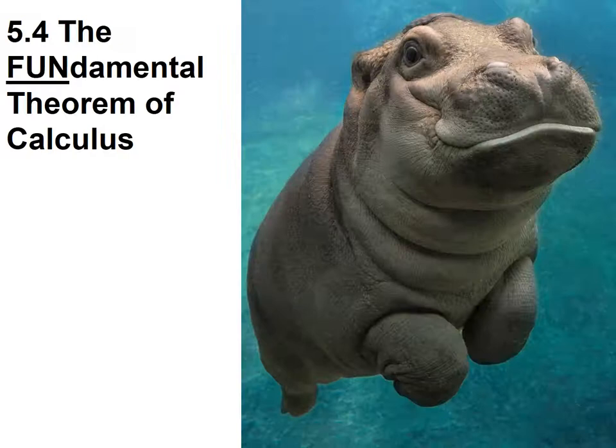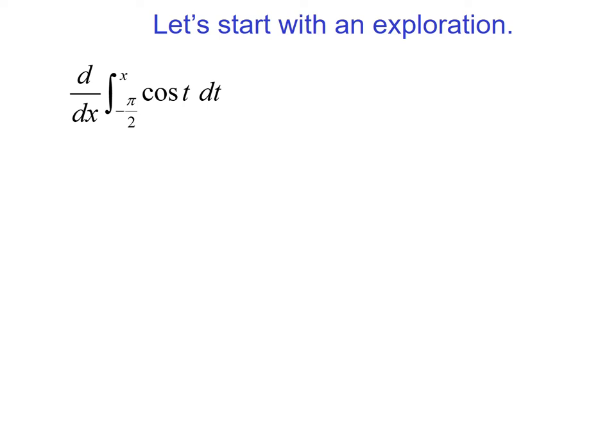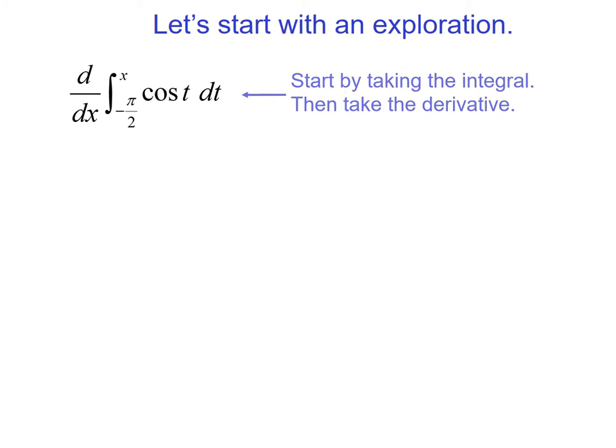We're going to take a look at the fundamental theorem of calculus. First, let's take a look at a little exploration. We're going to take the derivative of an integral, and this integral goes from a constant negative pi over 2 up to x. Since we have x in the limit of integration, we use a different variable in the integrand, so we have cosine of t dt.